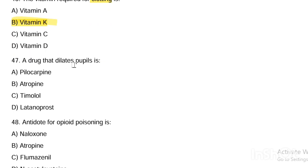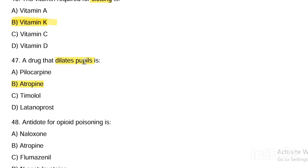Next question. A drug that dilates the pupil is: Option A, pilocarpine. Option B, atropine. Option C, timolol. Option D, latanoprost. Answer is Option B — atropine dilates the pupil. Pilocarpine, timolol, and latanoprost are used for glaucoma to reduce intraocular pressure.